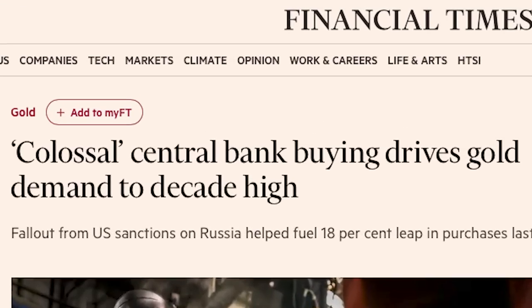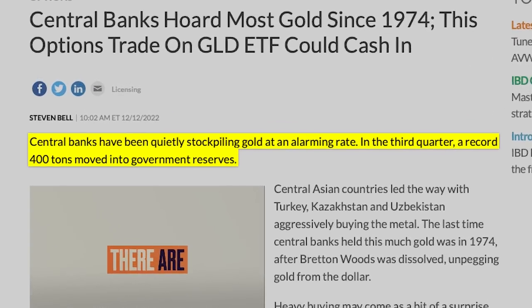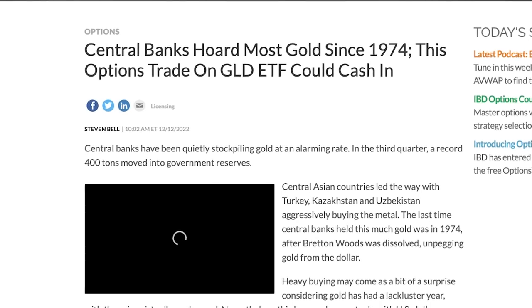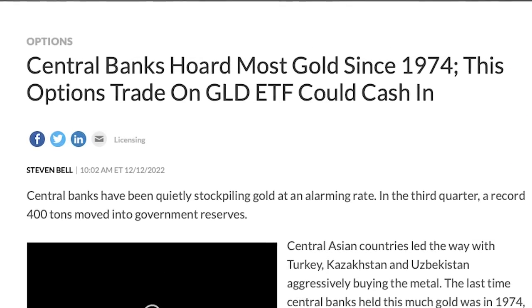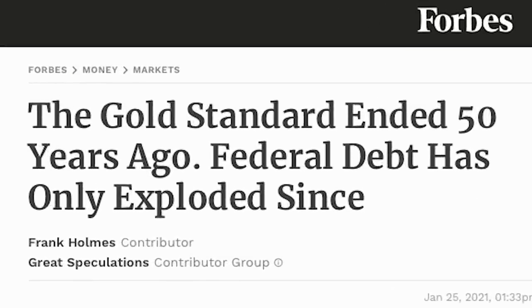This move by the central banks to start buying gold really started in 2022. In the third quarter of 2022, central banks bought more than 400 tons of gold. To put that in perspective, the last time we saw central banks go out of their way to acquire this much gold was back in the early 1970s after President Richard Nixon took the dollar off of the gold standard. Now, to help explain why central banks are acquiring so much gold today, let me start by giving you a little bit of backstory on gold and our money.